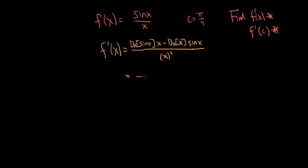If we go ahead and take those smaller derivatives, the derivative of sine is cosine. So we have cosine x times x — I'll write the x out in front so I don't accidentally think there's a cosine of x squared. So x cosine x, minus the derivative of x, which is just one, so minus sine x, over x squared.